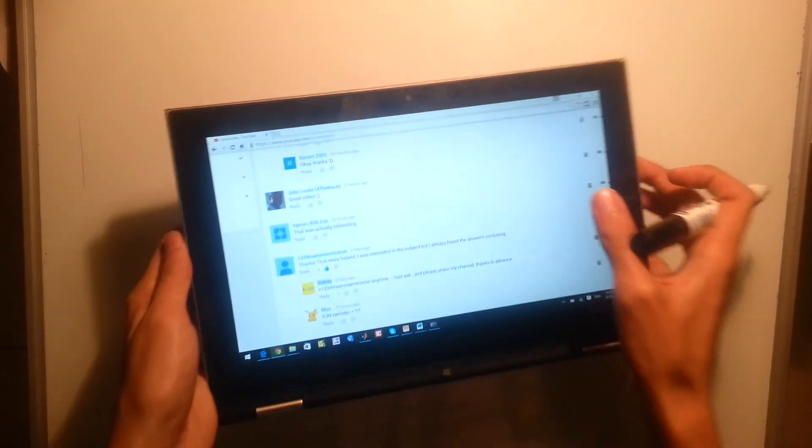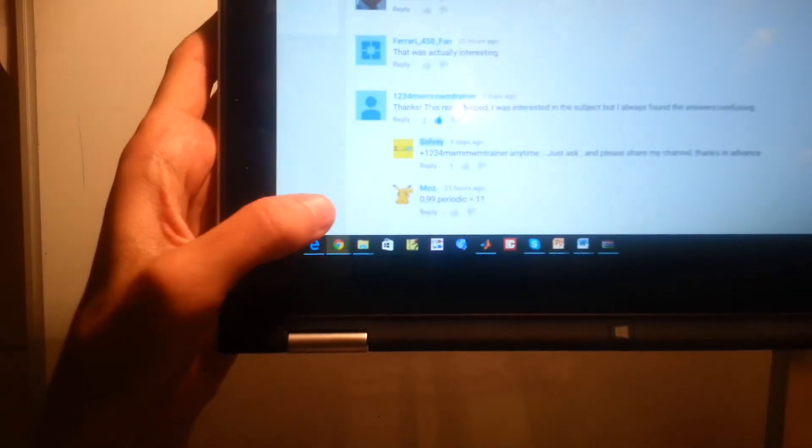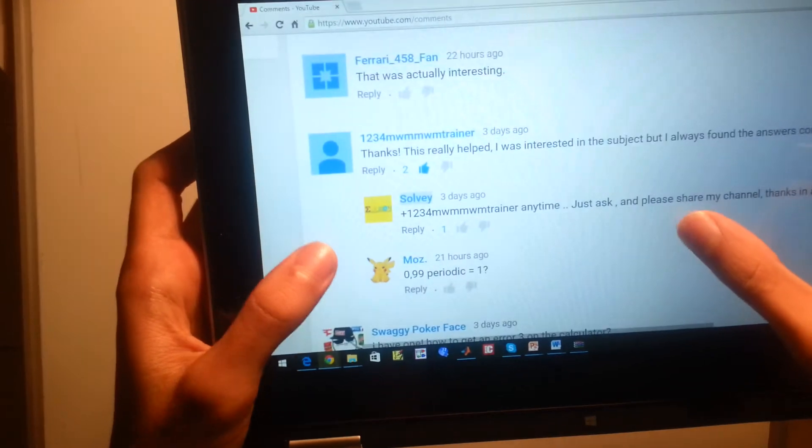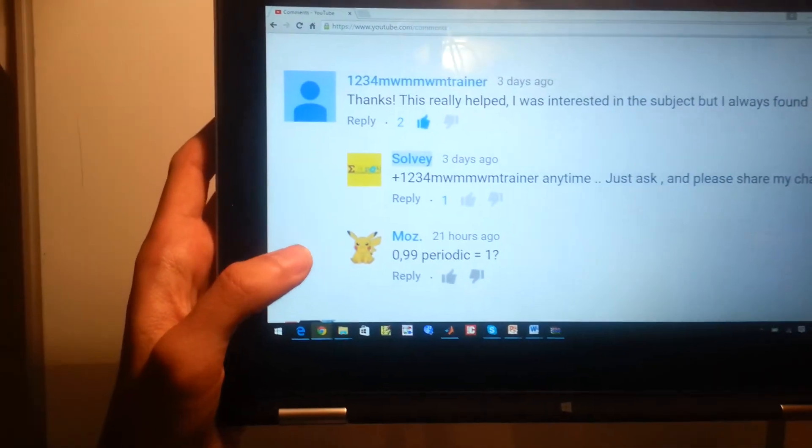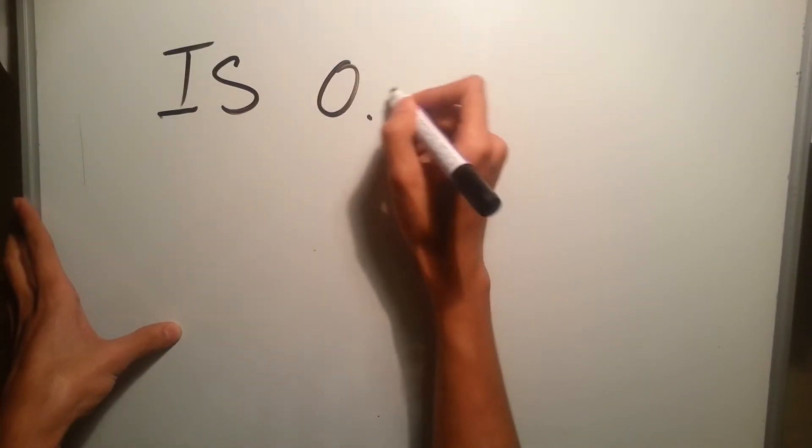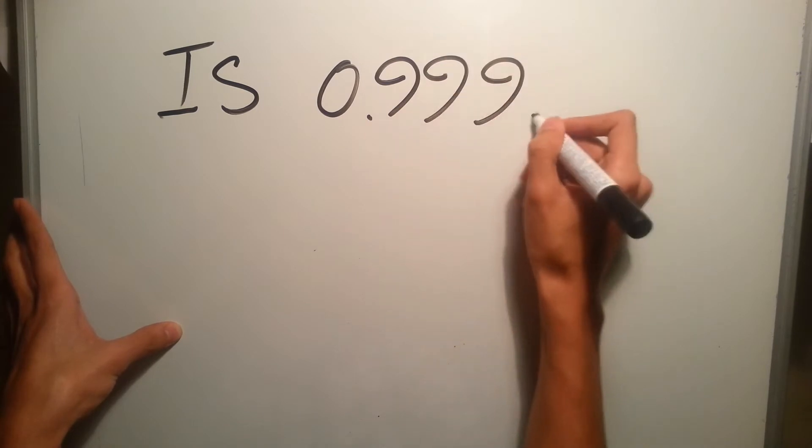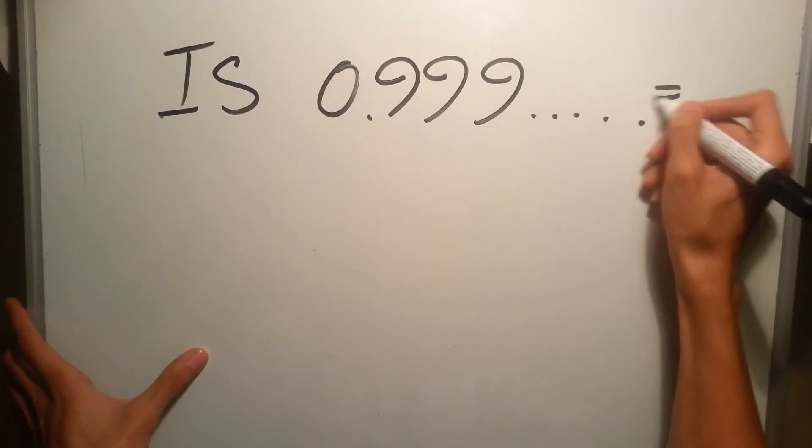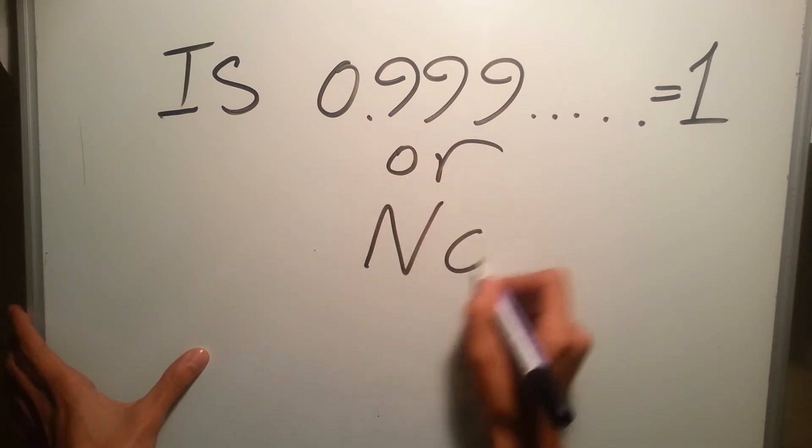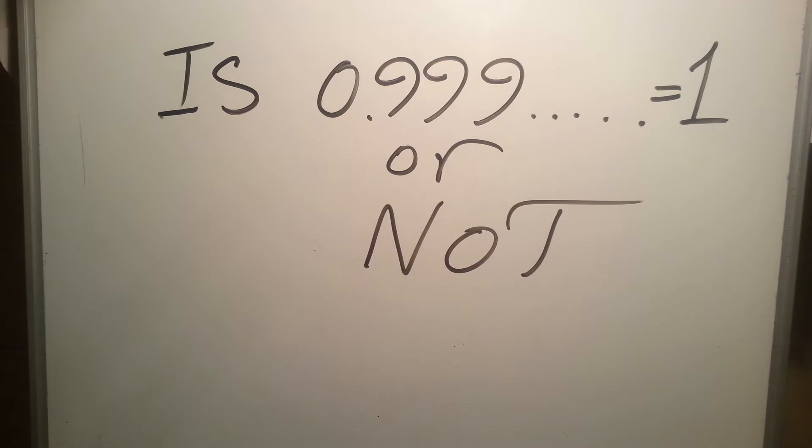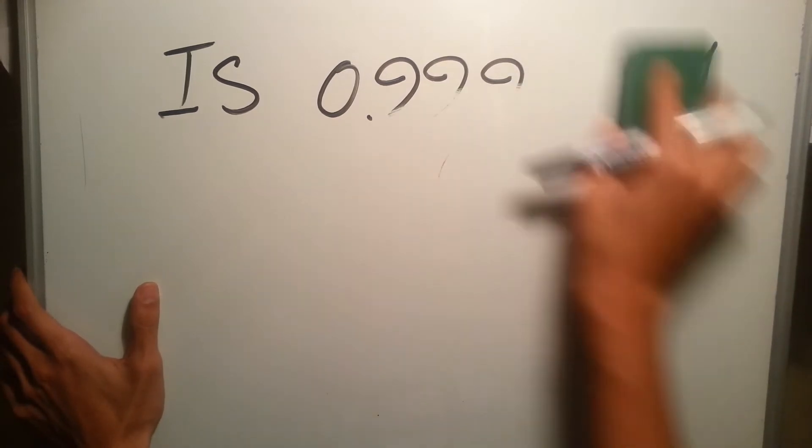First of all, I have this very quick question asked by Moz, with the Pikachu profile picture. He says 0.99 periodic equals one, question mark. Basically he's asking one of the most famous questions in mathematics: is 0.999 up to infinity equal to one or not? In order to answer your question, first of all I'll directly answer: yes, it does equal one.